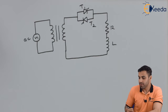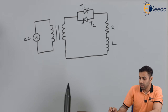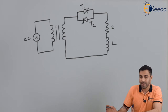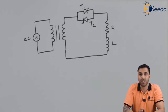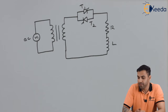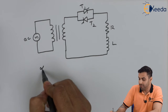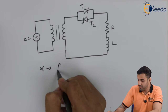If we consider this circuit diagram for the AC voltage converter for an R and L load, we can easily control alpha, which is the firing angle or the triggering angle.